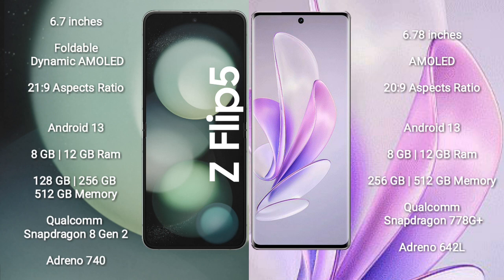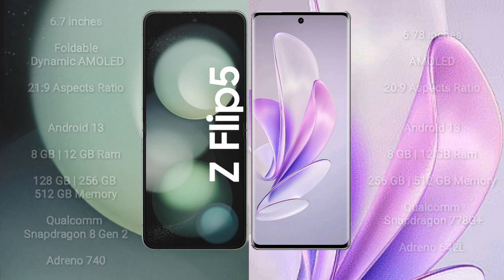Samsung Galaxy Z Flip 5 comes with 8GB and 12GB RAM, with 256GB and 512GB internal storage. It is powered by a Qualcomm Snapdragon 8 Gen 2 processor with GPU Adreno 740. Vivo A70 comes with 8GB and 12GB RAM and 256GB and 512GB internal storage, powered by a Qualcomm Snapdragon 778G plus processor with GPU Adreno 642L.